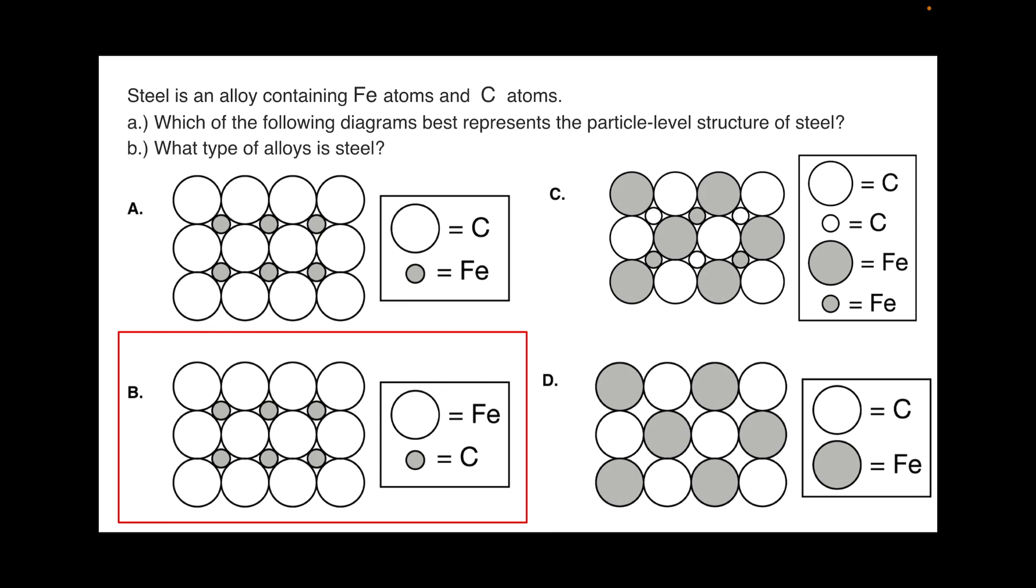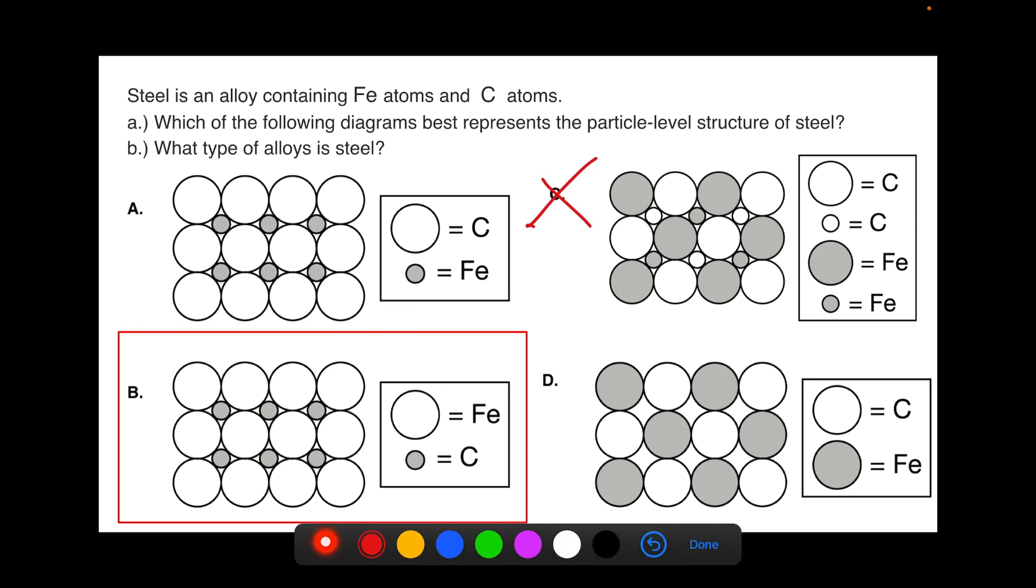Therefore, its atomic radius will be much smaller. So this question actually relies on your knowledge of periodic trends. That's how I got to B. I know that carbon is much smaller than iron, so I needed the option where we had smaller carbon atoms than iron atoms. You should have eliminated C right off the bat. Nothing about an alloy changes the radius of the atoms.